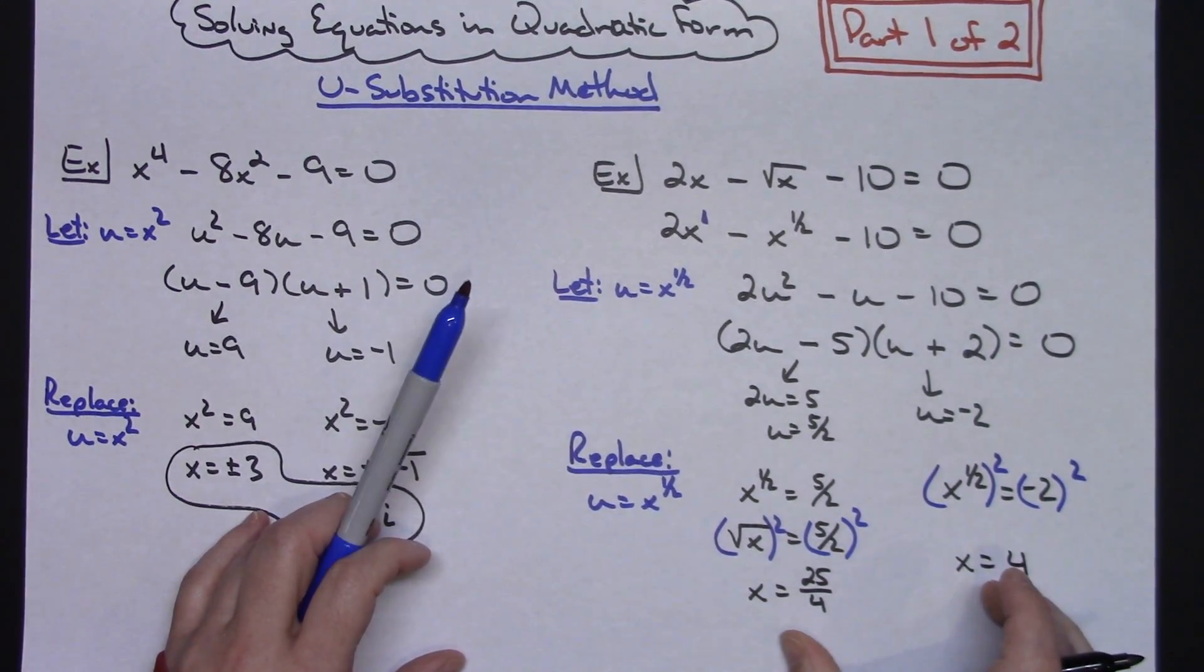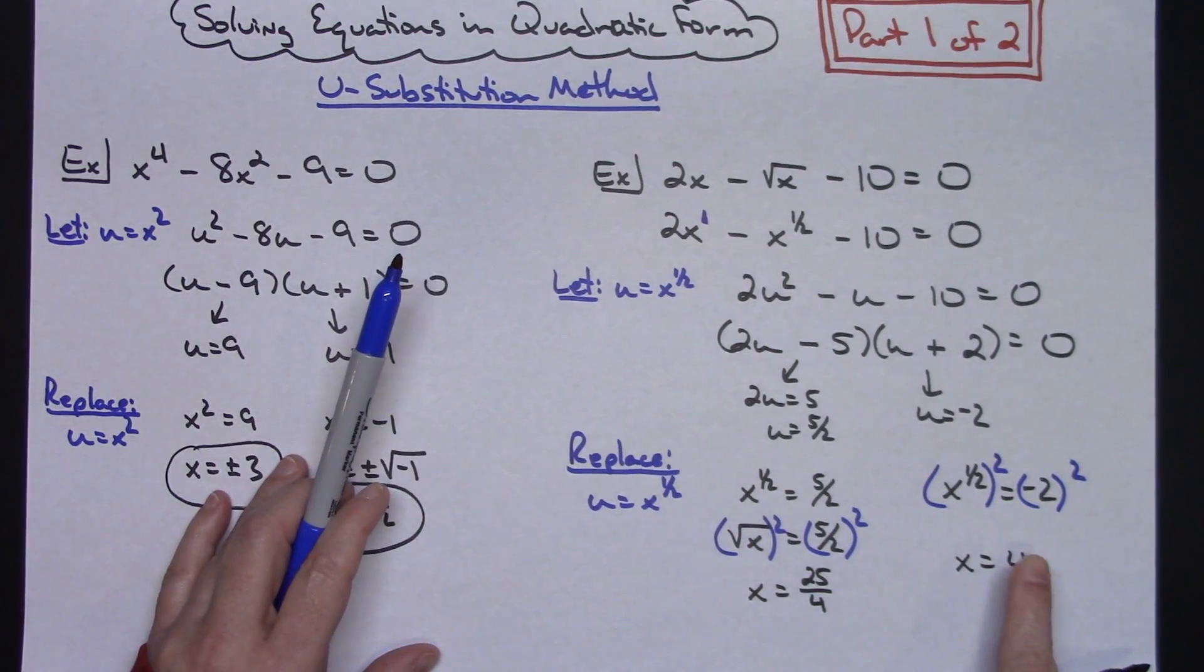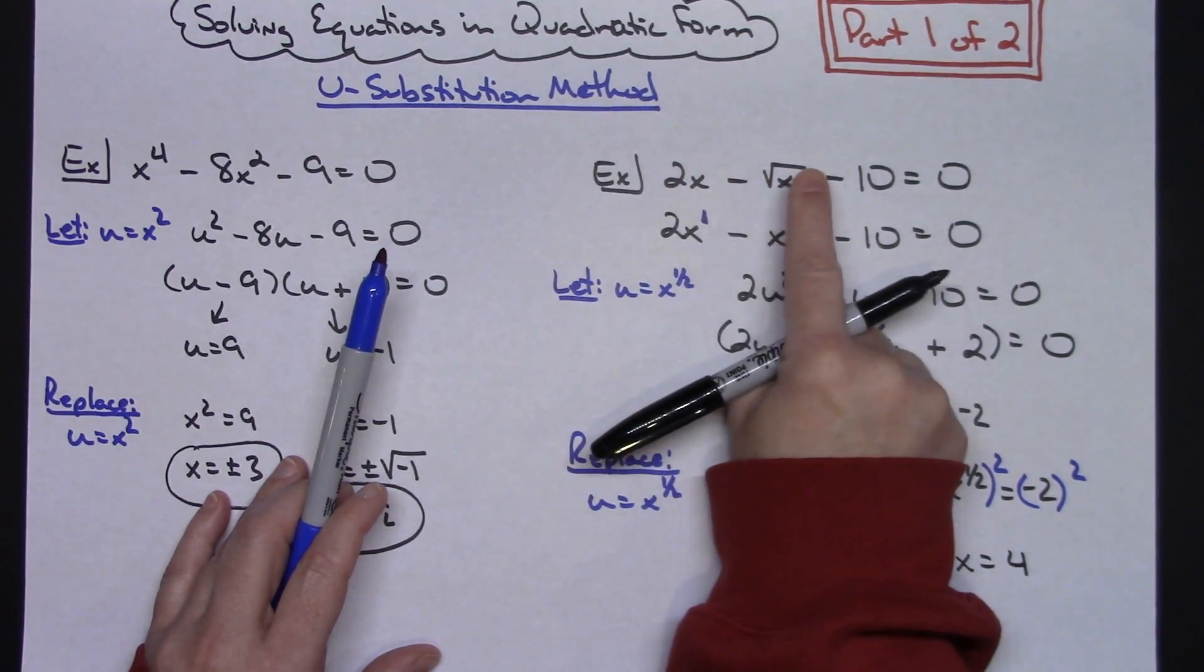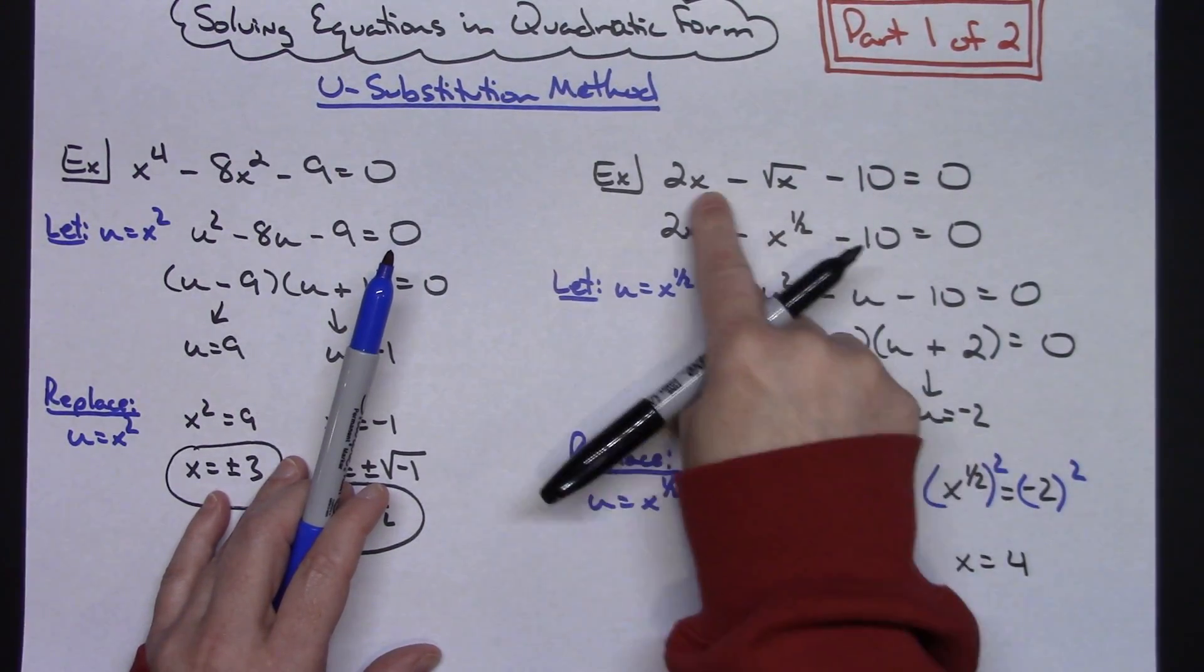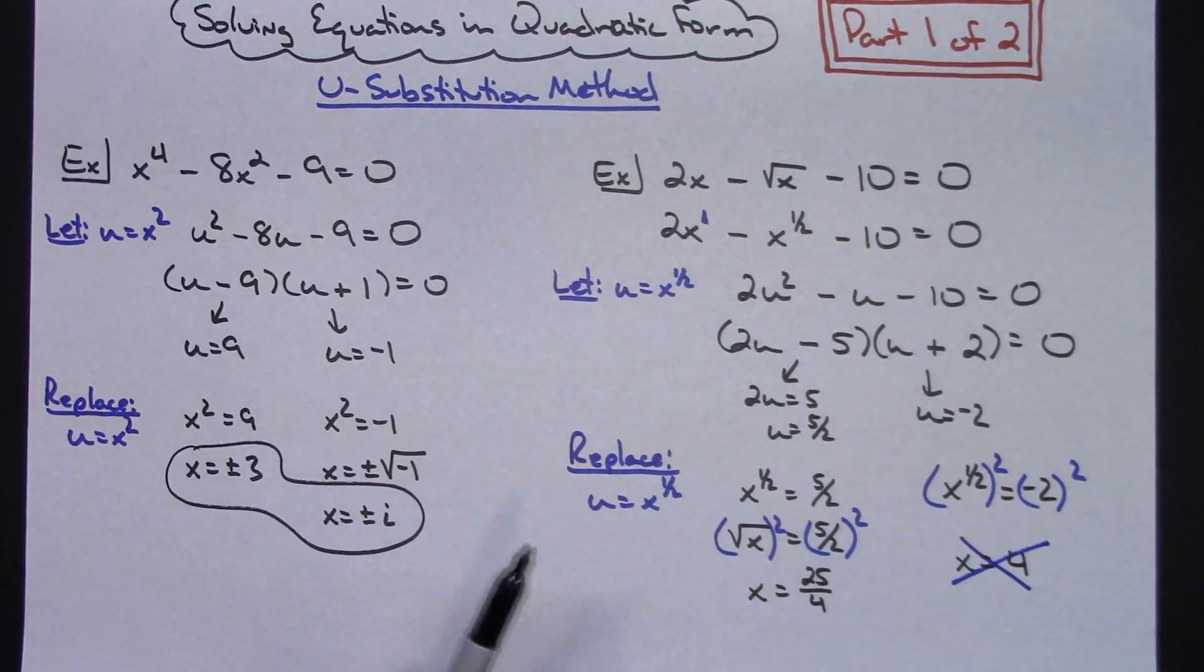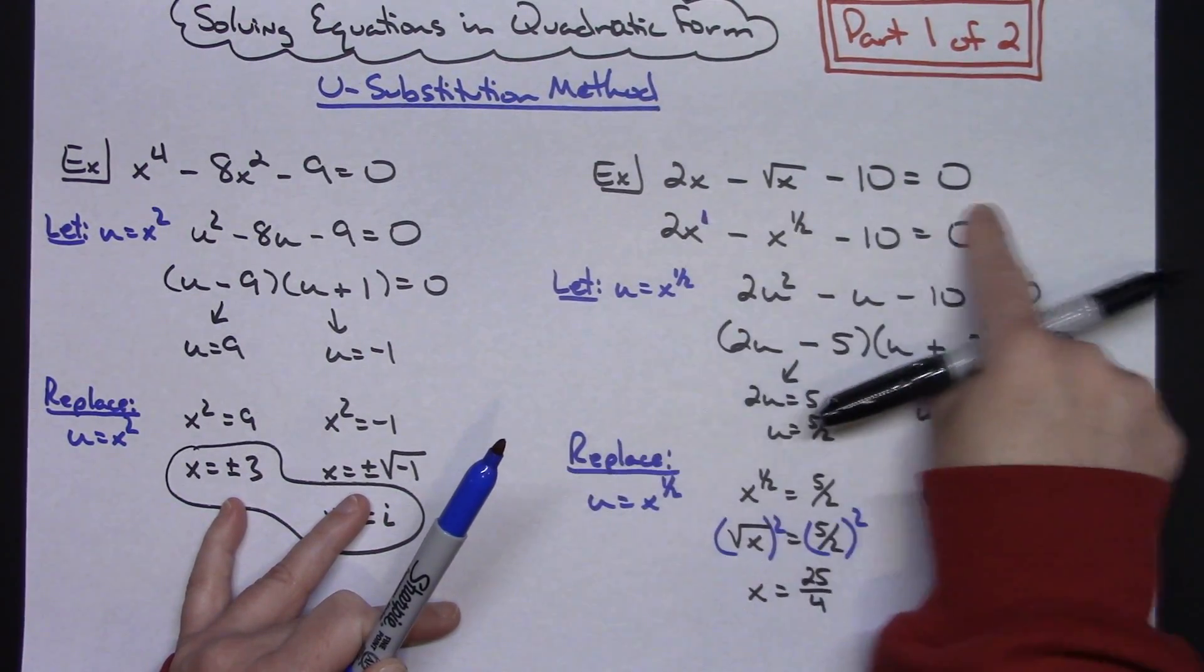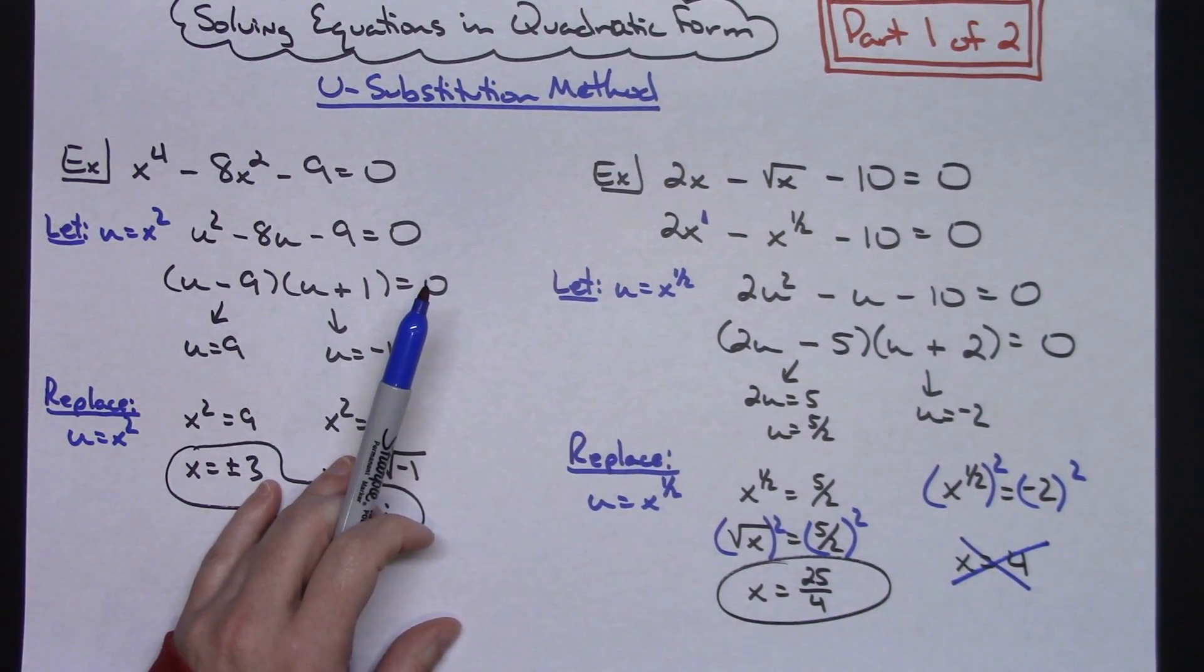Now again, like I said, you always need to check these answers. The 4 is going to be the easiest, so let's check that in there. So if I plug 4 back in here, I'm going to have 8 - 2 - 10, which is clearly not going to give me a 0. So checking is important because then that means that x = 4 is not a solution. And then plugging in that 25/4 right there, it does turn out to solve and work out to 0. So then this being my only solution there.